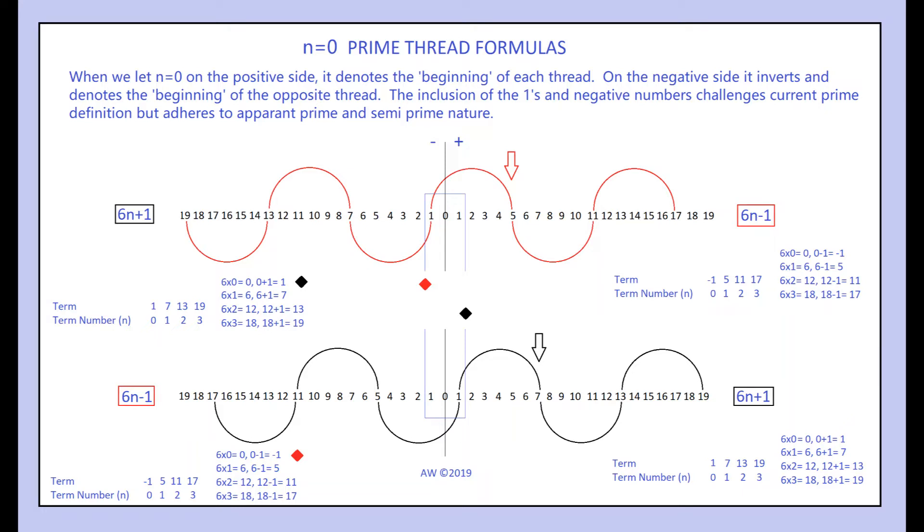On 5's red thread here, when we let n equals 0 on the positive side and plug that into the 6n minus 1 equation, we get negative 1 because 6 times 0 is 0 and 0 minus 1 is negative 1. Since 0 is now the first term, negative 1 could be considered the beginning of this thread.